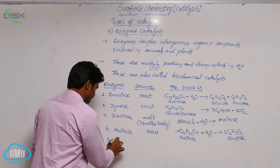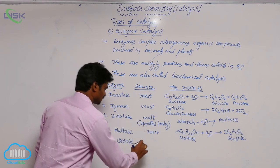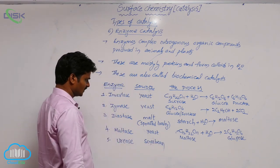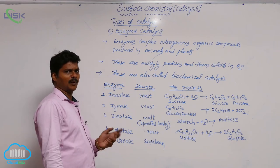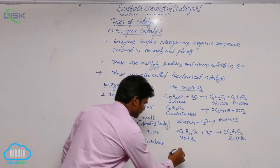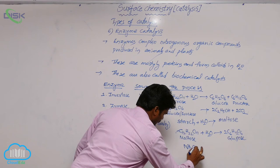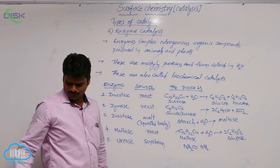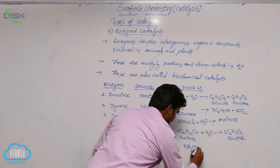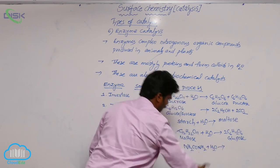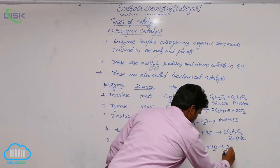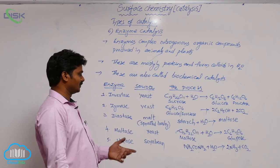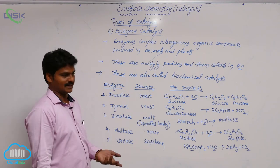The fifth enzyme is urease. Its source is soya bean. It decomposes urea (NH2CONH2) into ammonia and carbon dioxide. This decomposition is carried out in the presence of urease.